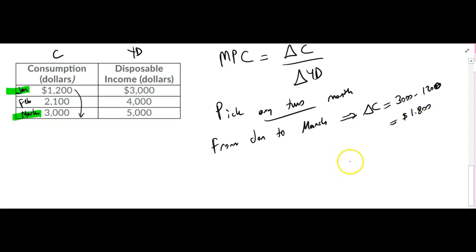During the same period, if we look at the change in disposable income, as you can see, it's going up by $2,000. And I can easily plug it in here.